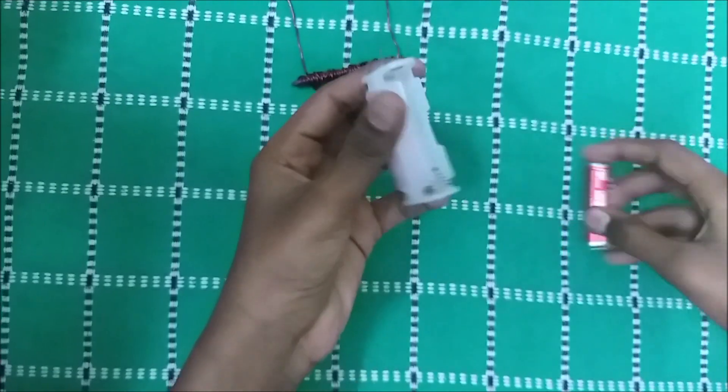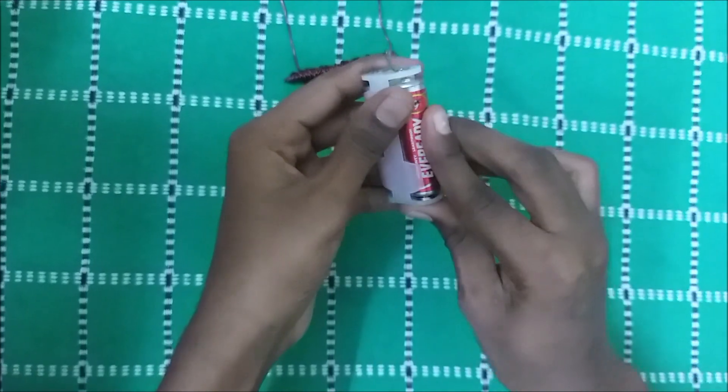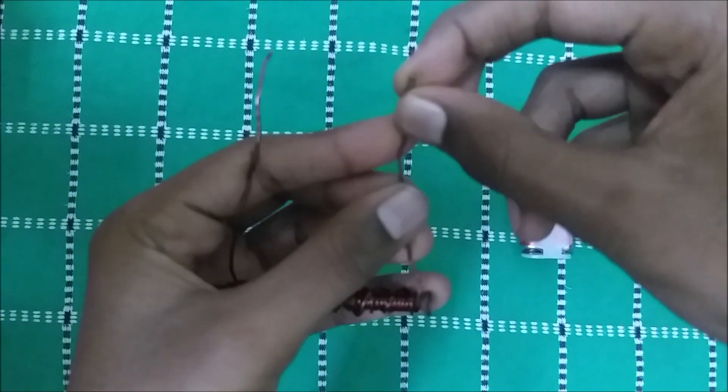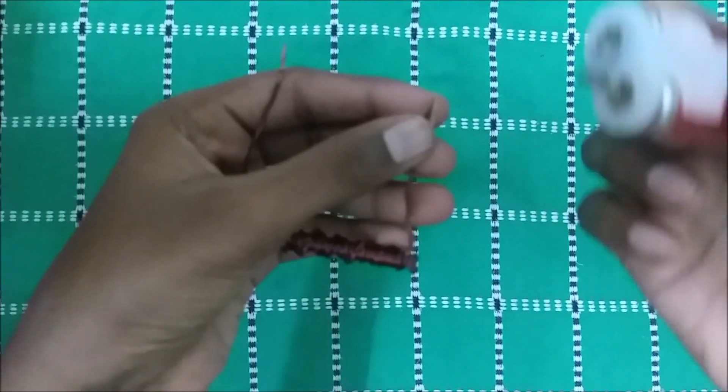Insert the batteries in the battery holder. Slightly fold the two ends of the wires. Connect the two ends of the wire to the two terminals of the battery.